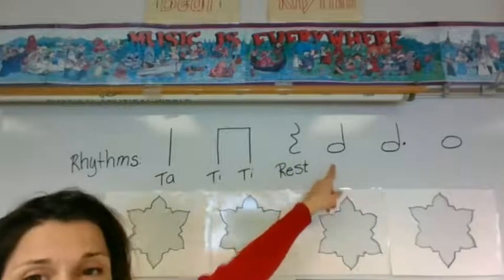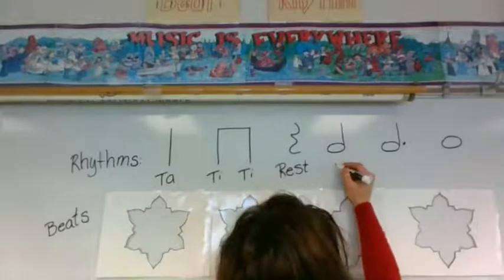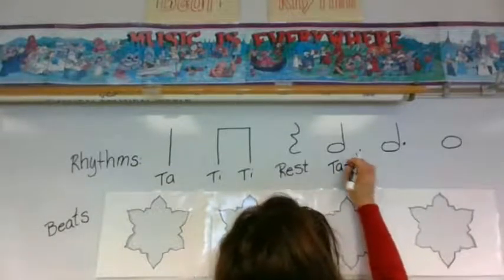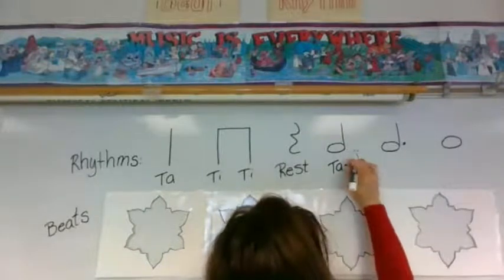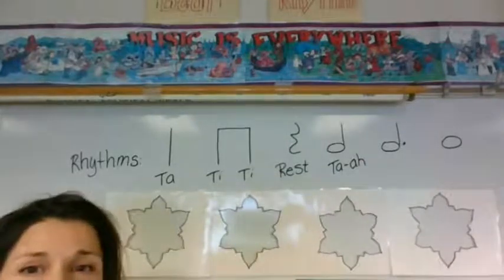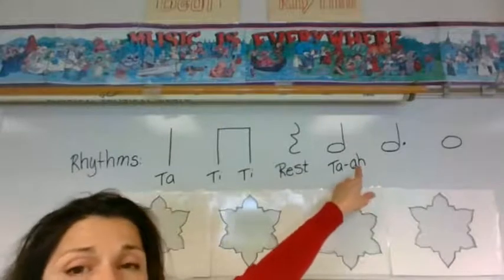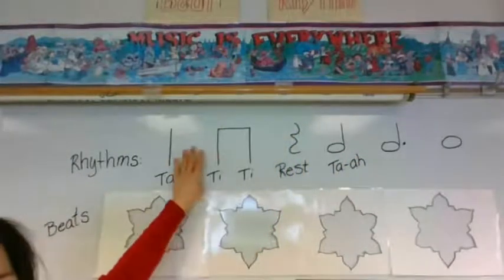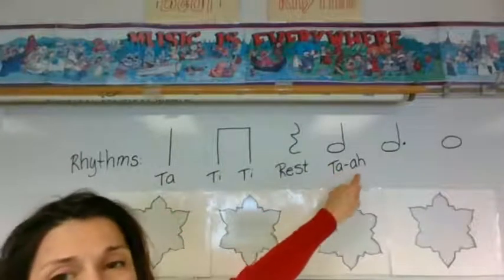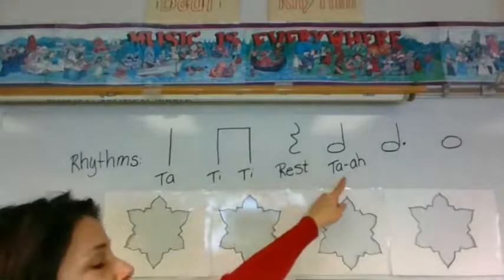What about this next rhythm? The fourth rhythm? We have lots of new rhythms in second grade. Ta-a. Ta-a is different than all of these rhythms because these are one beaters. What is the value of ta-a? It's a two beater.